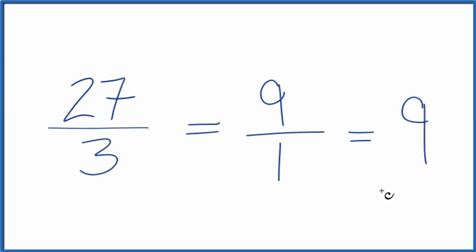So that's it. This is Dr. B, simplifying 27 thirds down to 9 over 1, or you could just call it 9. Thanks for watching.